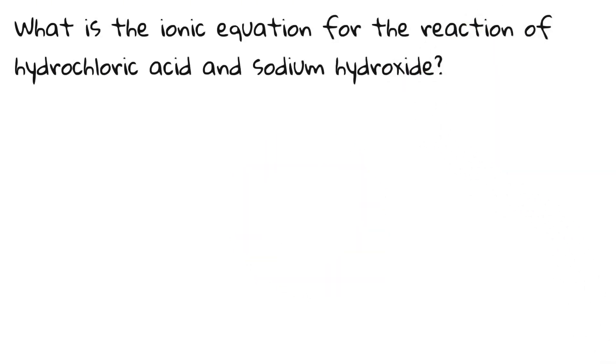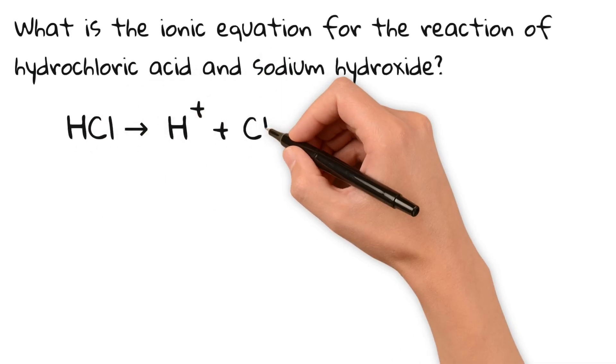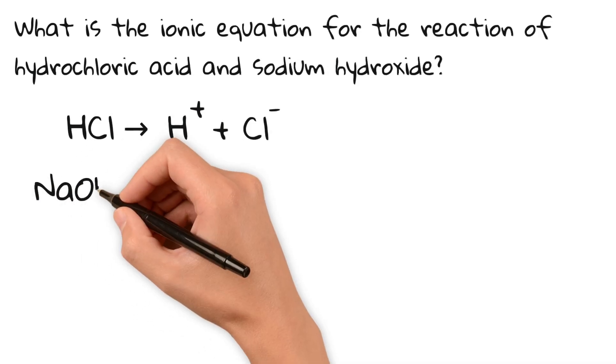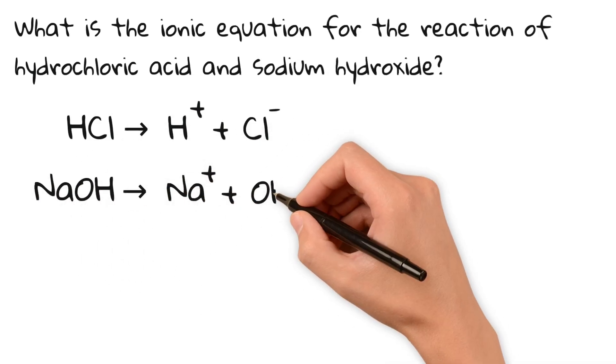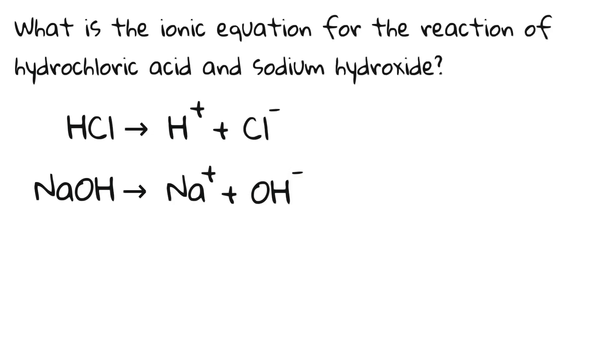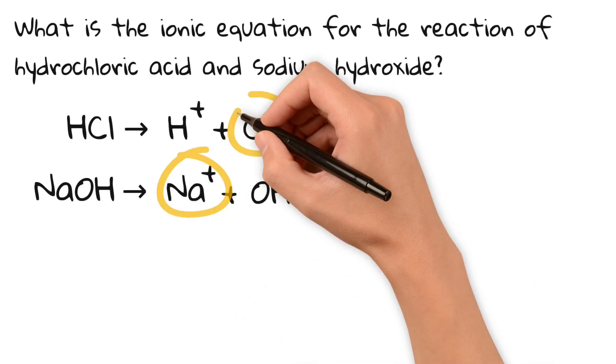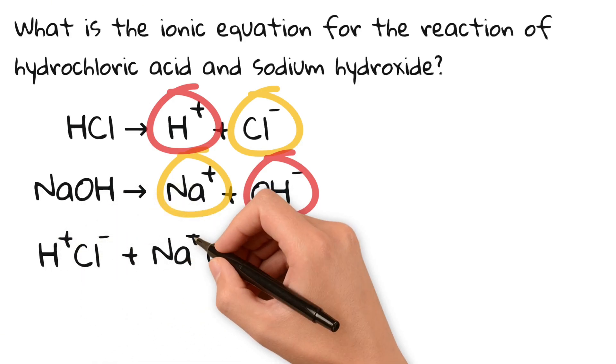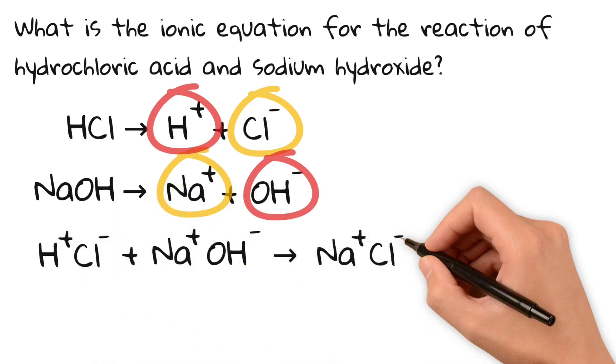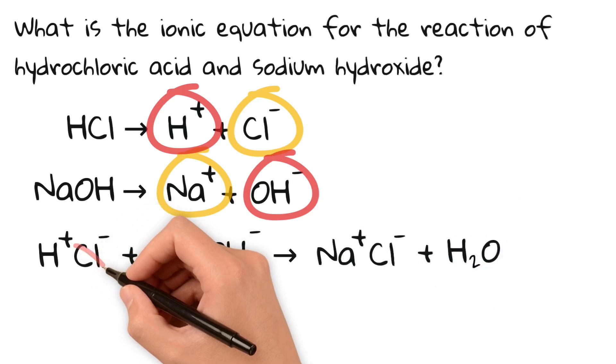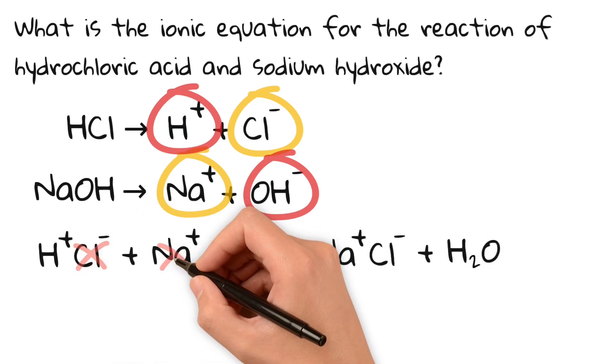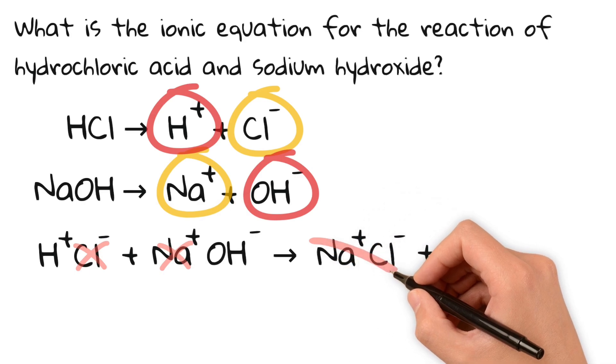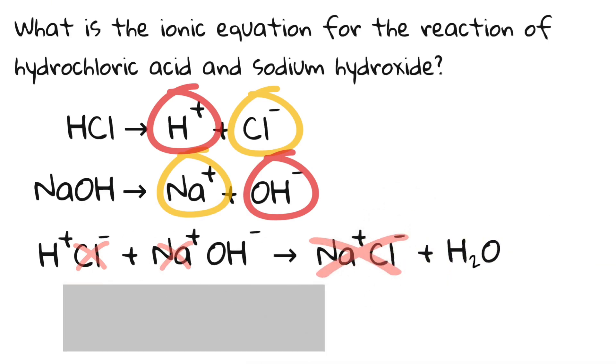Here it makes sense to separate the acid and the base into its ions. Hydrochloric acid splits up into H+ and Cl-. Sodium hydroxide splits up into Na+ and OH-. Now let's rearrange those ions. Positive ions like to pair with negative ions so sodium will pair with chloride and H+ will pair with the hydroxide. As sodium and chloride are spectator ions, meaning they can be found in the solution both before and after the reaction, they can be disregarded. So the final answer is H+ plus OH- reacts to water.